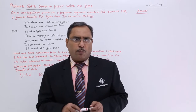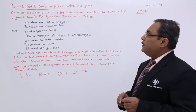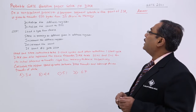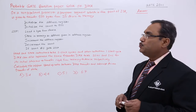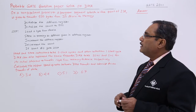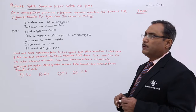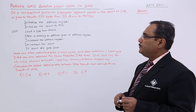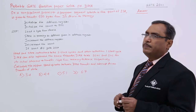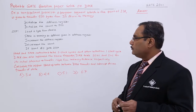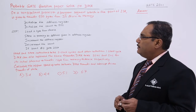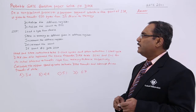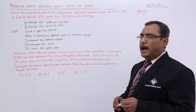Let me discuss this problem first. On a non-pipeline processor, a program segment which is part of the interrupt service routine is given to transfer 500 bytes from an I/O device to memory. So, 500 bytes of information is to be transferred from the I/O device to the memory. The steps include: initialize the address register and initialize the count to 500.